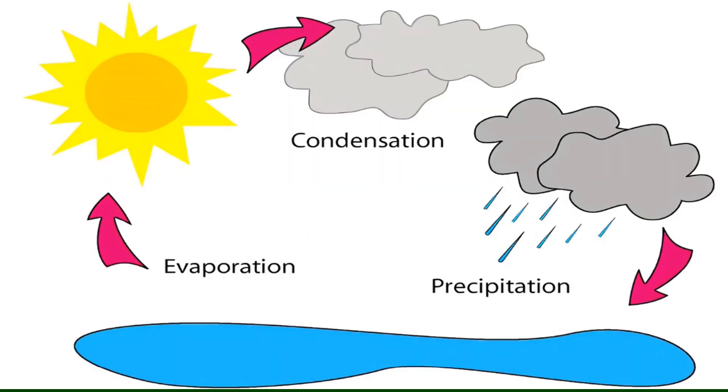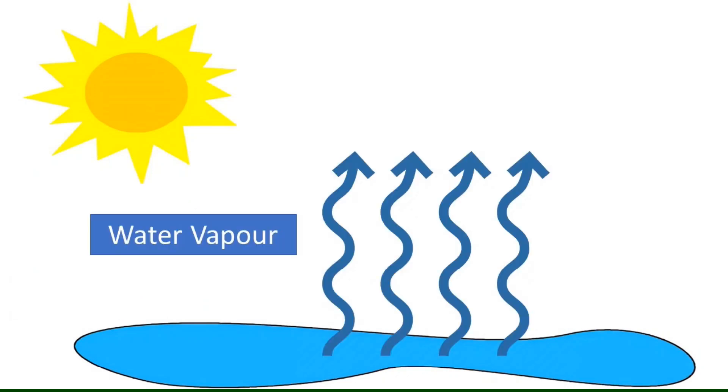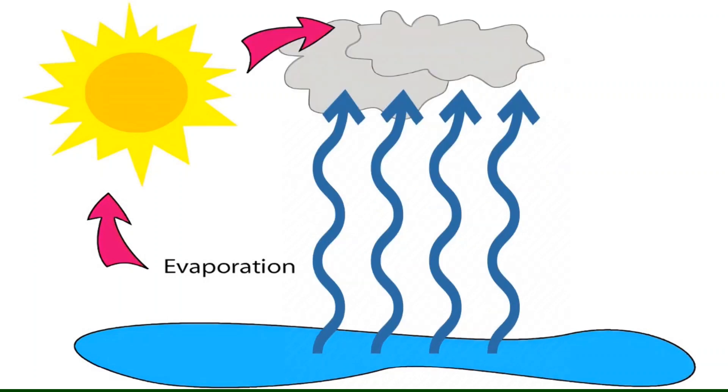This is what the water cycle looks like. First, the sun heats the sea and up in the air we see water vapor, little droplets, and they form a cloud. So the water droplets fill up the cloud with water.